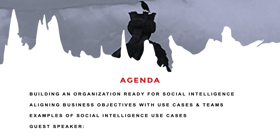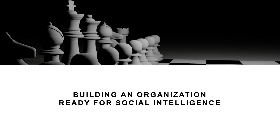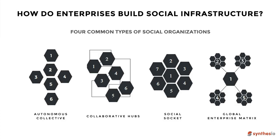The first part is about building an organization that's ready for social intelligence. I've been around the block a few times and seen social teams structured in many different ways. When I talk about four common types, these are general groupings by which I'll give examples about how you can use social data to inform communications across teams — improving marketing, corporate communications, sales, customer service, and anything benefiting from real-time market intelligence.